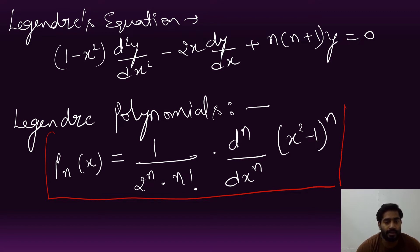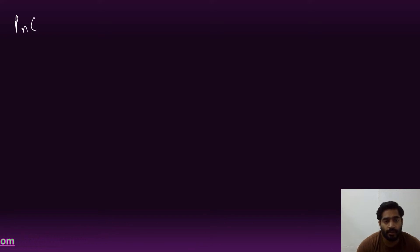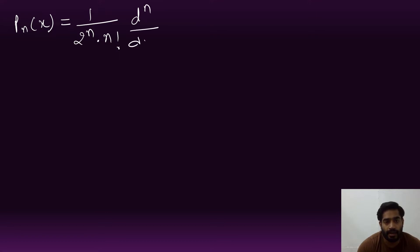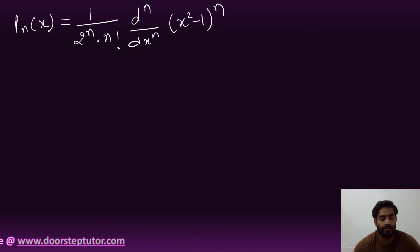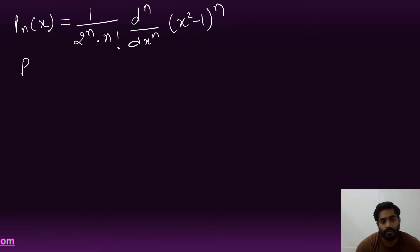The Legendre polynomial is P_n(x) = 1/(2^n · n!) · d^n/dx^n · (x² − 1)^n. Now if we substitute specific values of n into this Rodrigues' formula, we can find individual polynomial expressions.